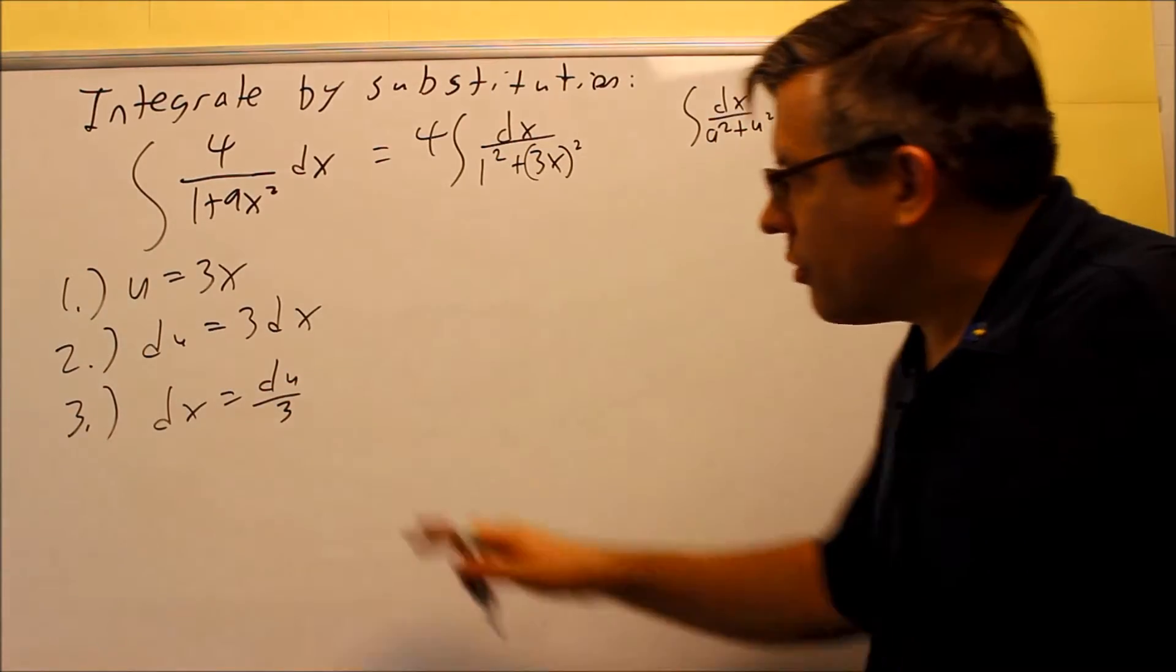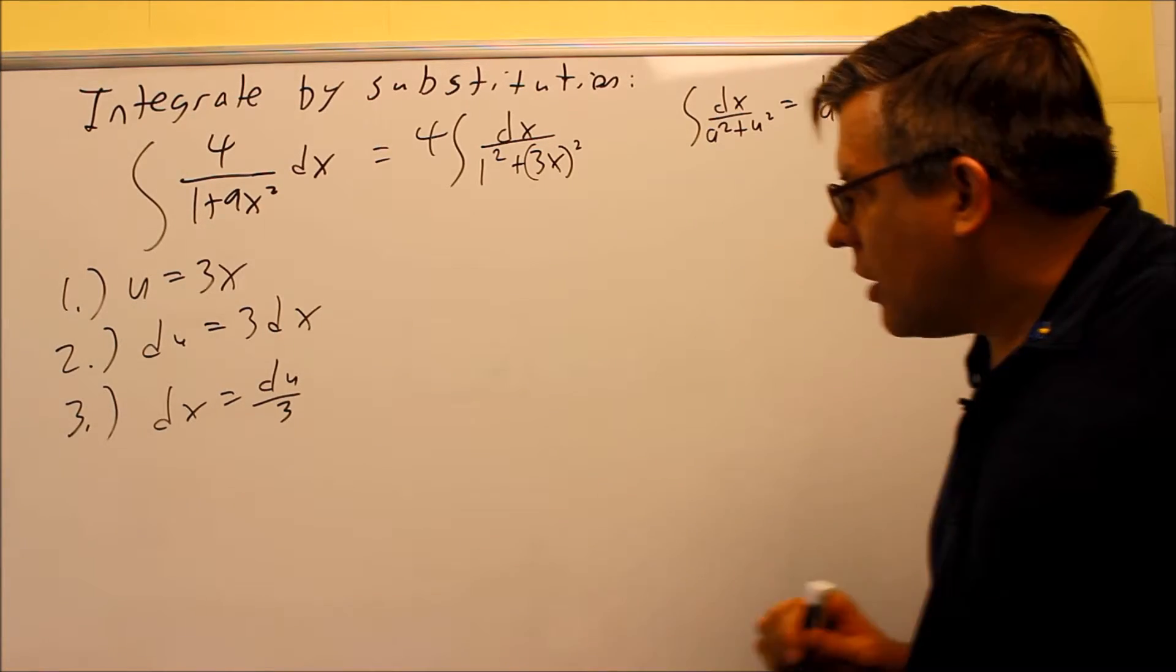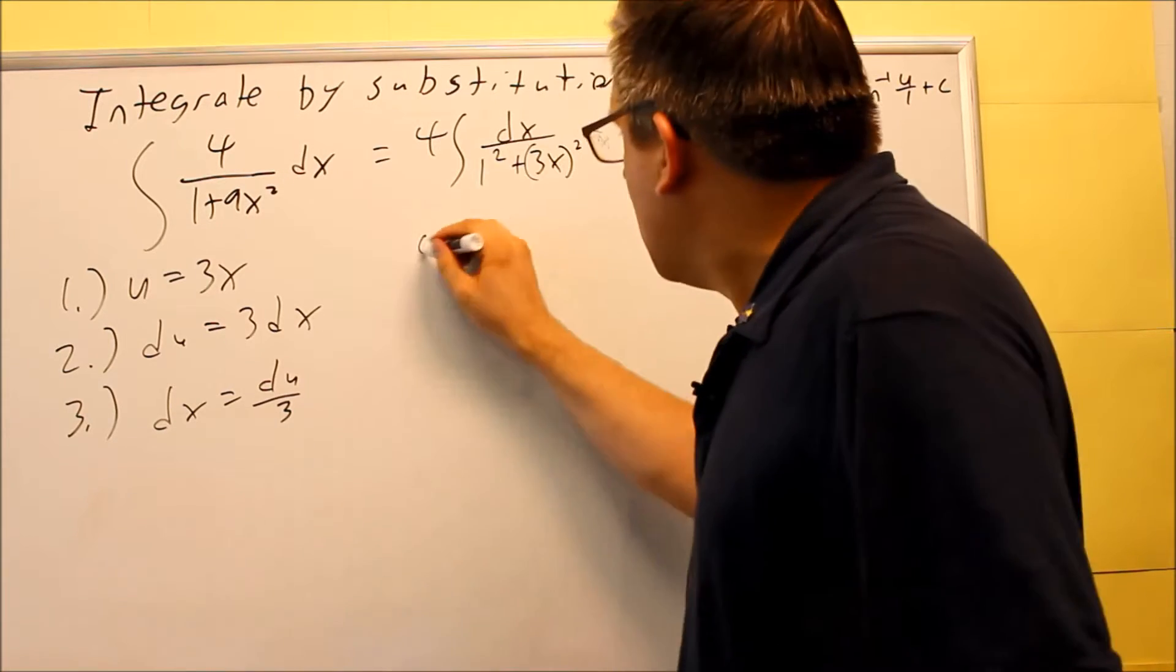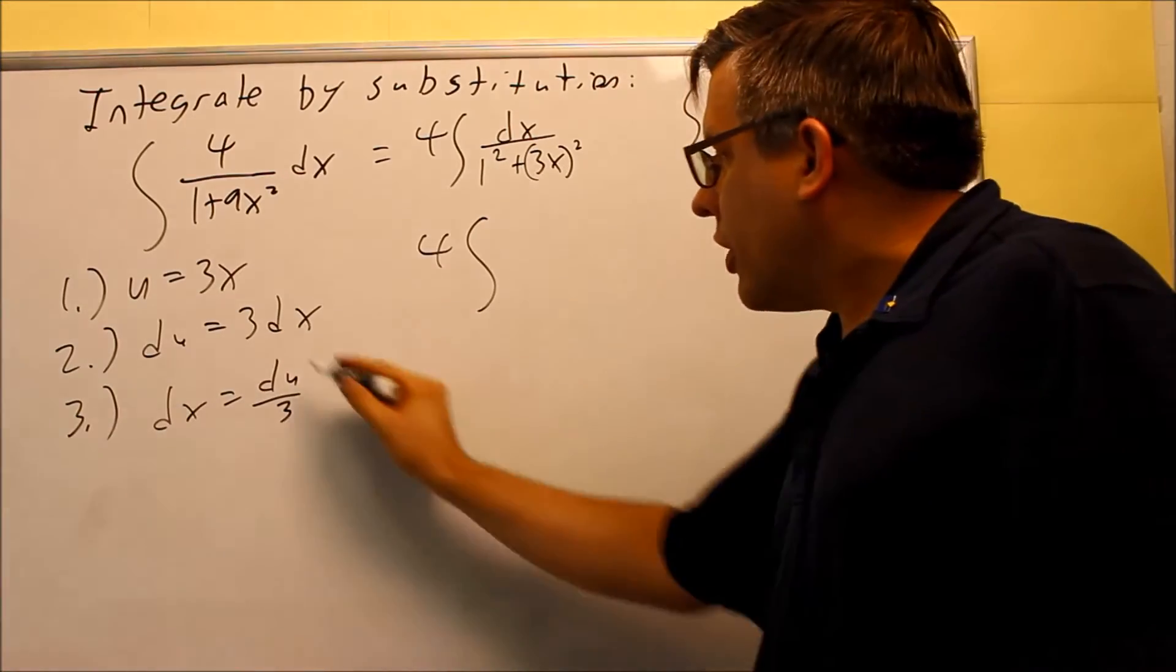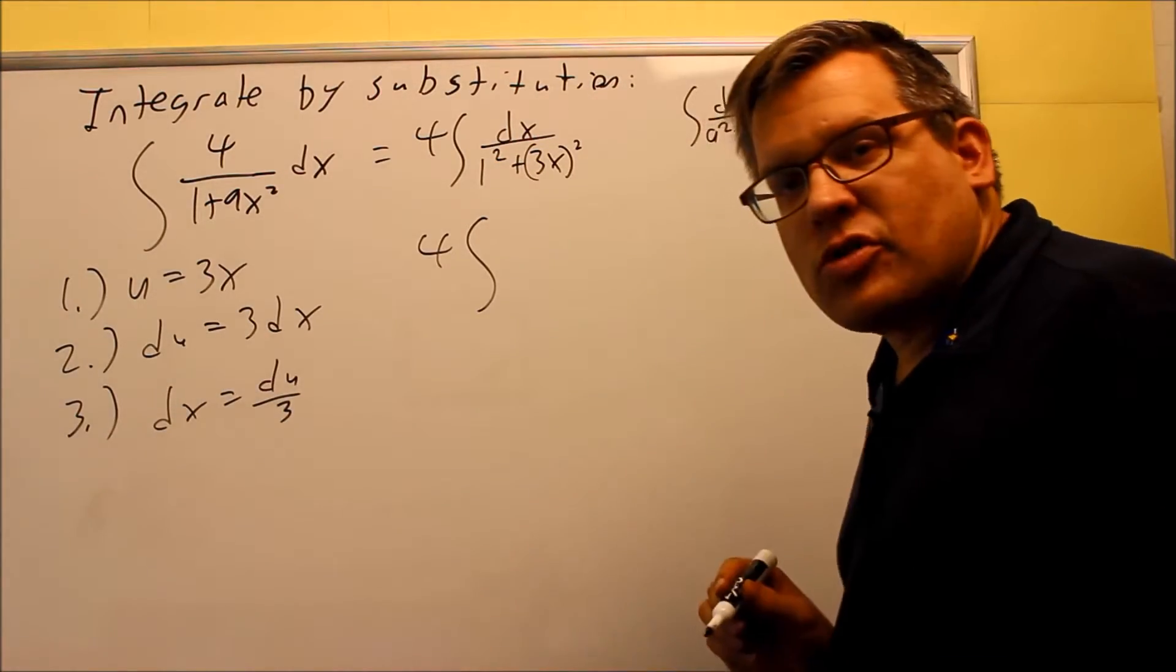So now what we're going to do is we're going to put this into our formula. Now when we do that, I have a 4 right here. In this case, the dx is going to be a du over 3. Now du over 3 is the same thing as a 1 third, 1 third times du. The 1 third I'm going to move on the outside. Now since I have a 4 already on the outside, 4 times a 1 third is going to give you a 4 thirds there on the outside.